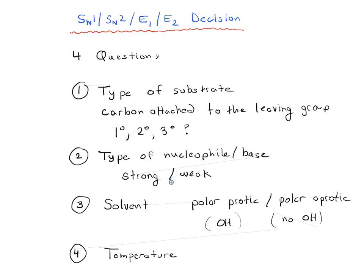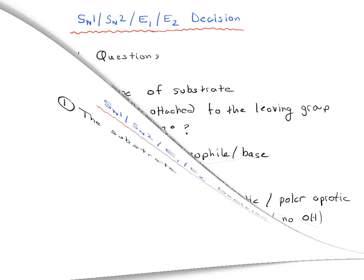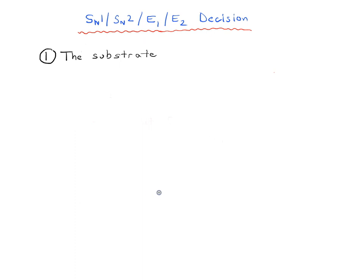In the last video we went through an overview of the SN1, SN2, E1, E2 decision, and we talked about the four questions we need to ask when evaluating reactions in descending order of importance. Today we're going to look at the first question — the type of substrate — whether the carbon attached to the leaving group is primary, secondary, or tertiary, and we're going to save the other questions for later videos.